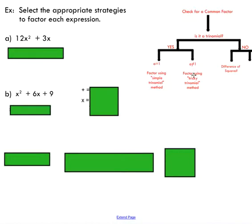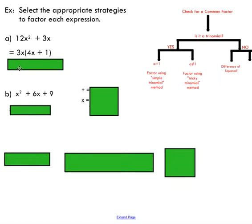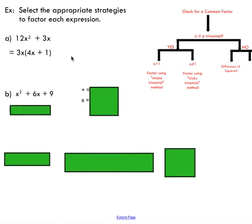I'm going to go over a couple of examples with the flowchart handy. For the first one, remember to ask: is there a common factor? Looking at this expression, you can see there is a common factor of 3x. I remove that 3x by common factoring and end up with this expression. If you have questions about common factoring, take a peek at my common factoring video tutorial. In this video I just want to show you how to select the right strategy.